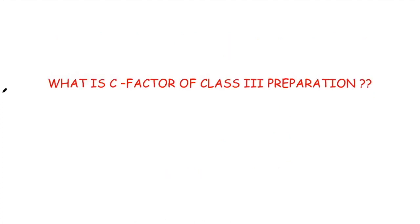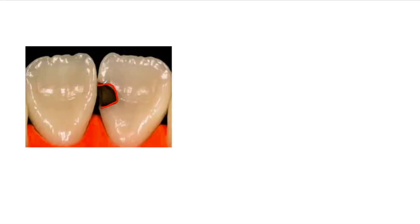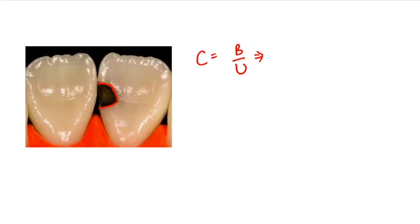Now let's calculate the C factor for class 3 composite restoration. To calculate the C factor for class 3, let's take the example of a class 3 cavity preparation of an incisor tooth. As we know, the C factor is the ratio of bonded to unbonded surfaces. If we look at the bonded surfaces in class 3 preparation, the incisal surface, the cervical surface, and the axial wall will all be bonded to the composite restoration. So we have 3 bonded surfaces.